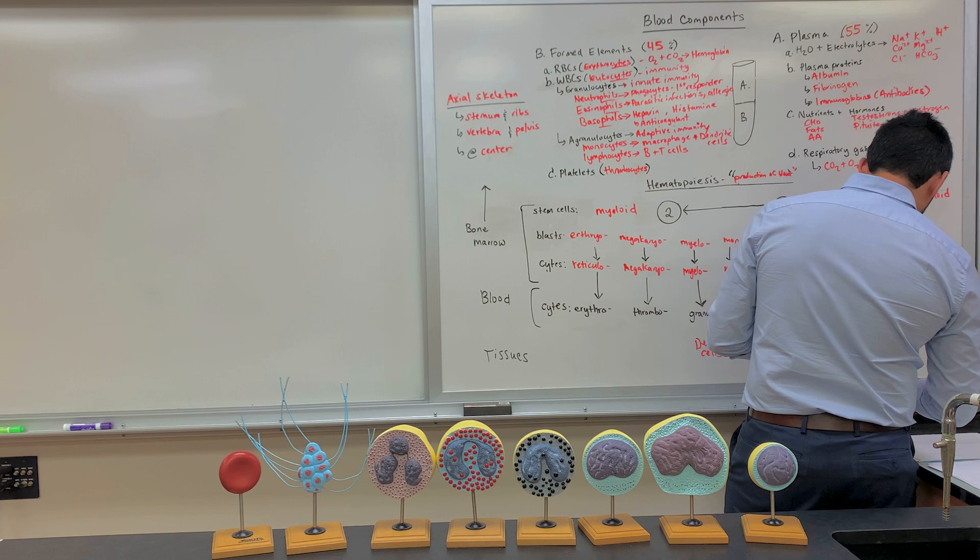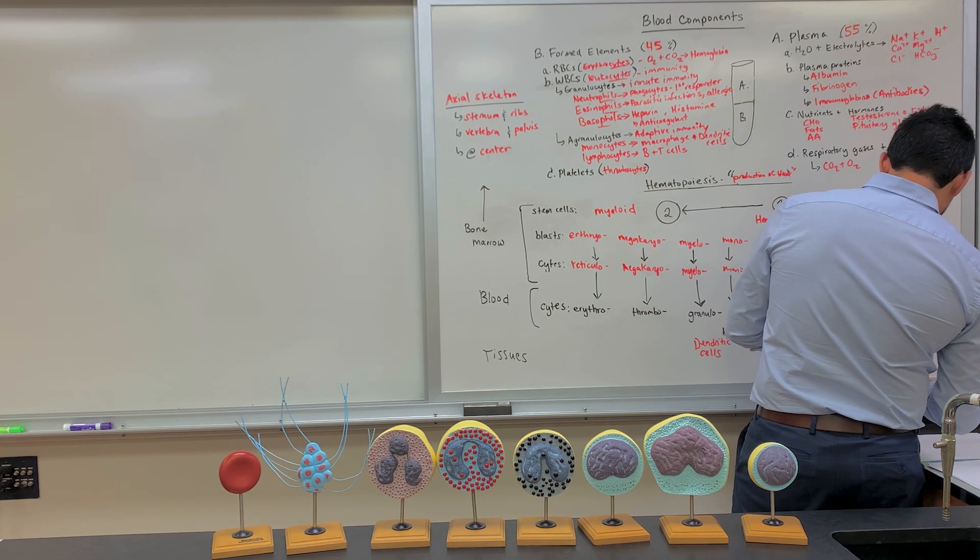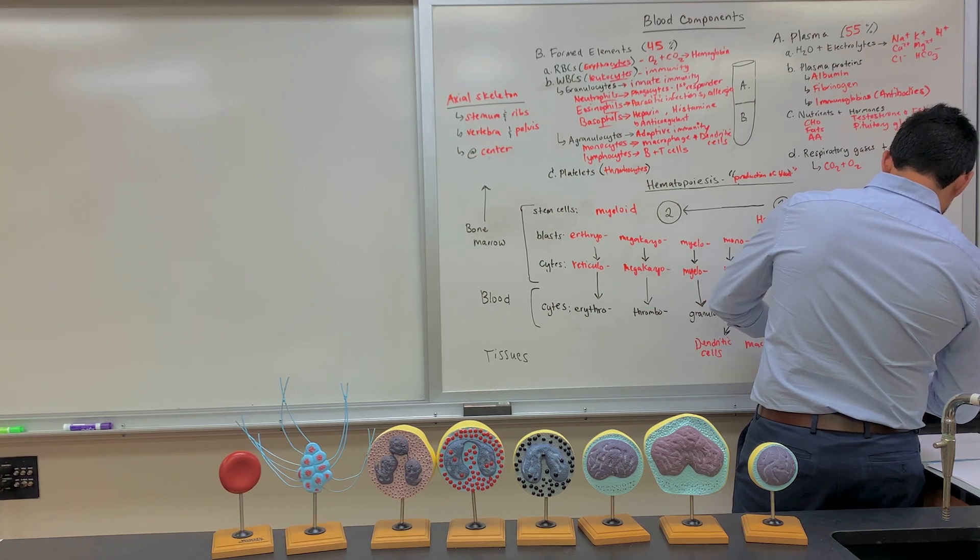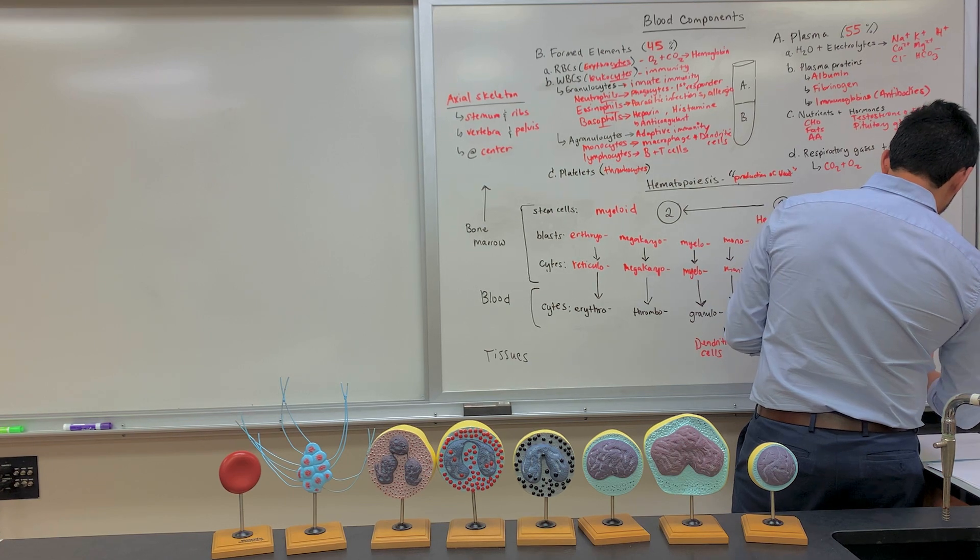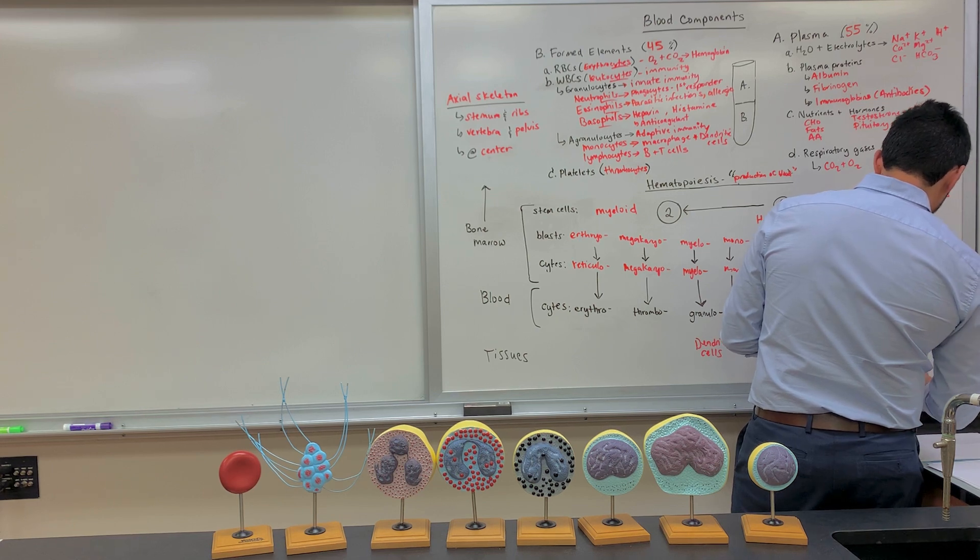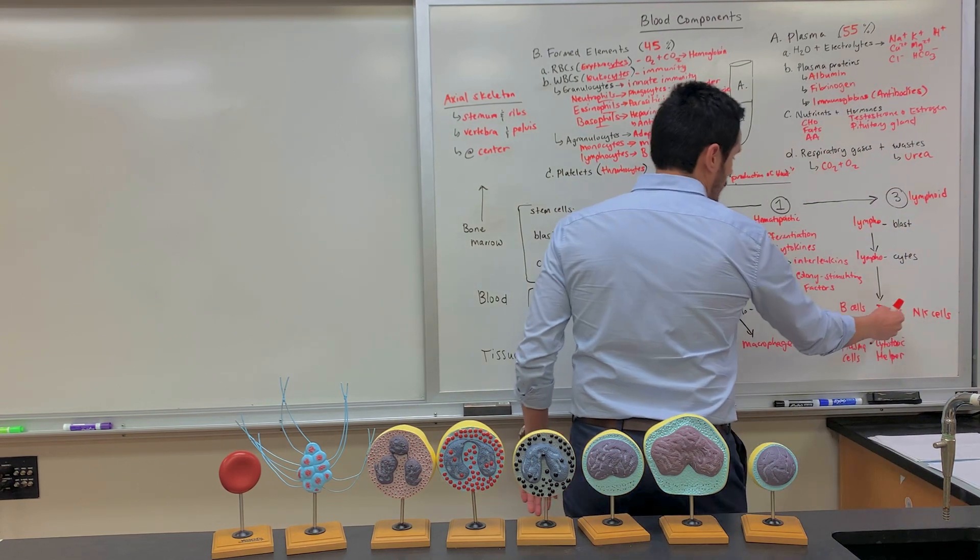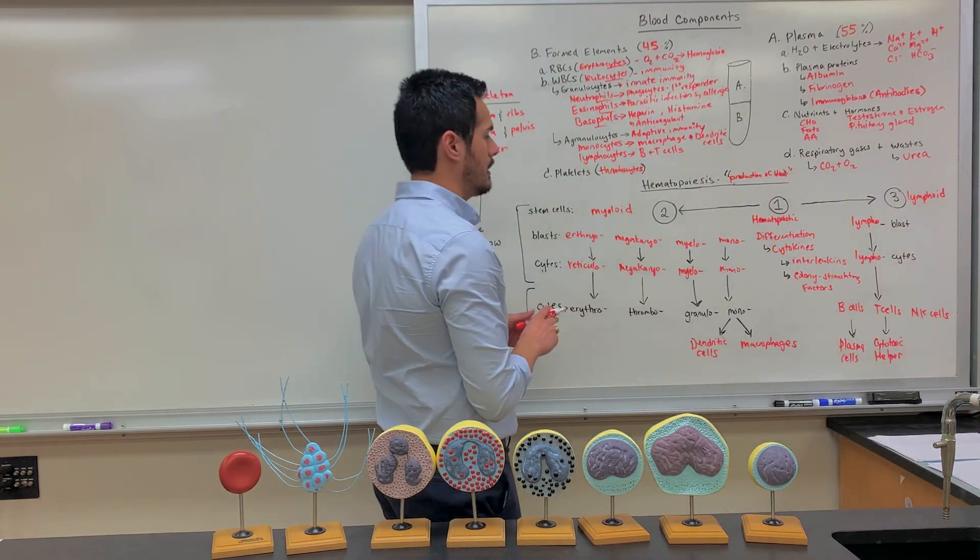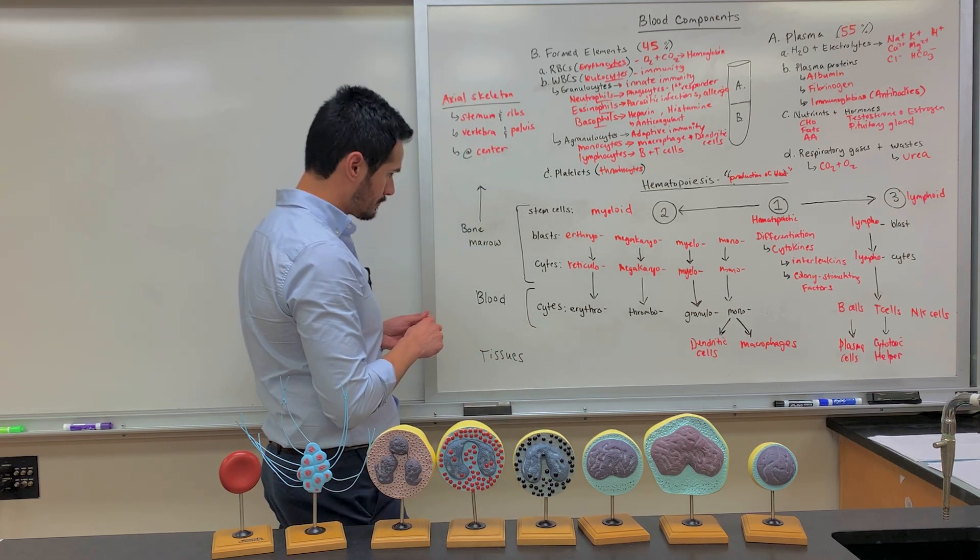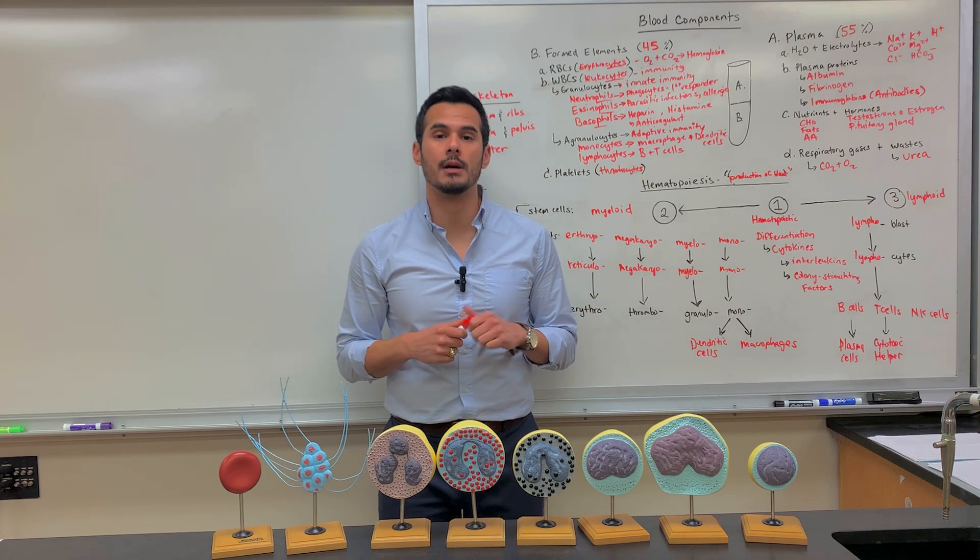So B cells develop into plasma cells, and then T cells develop into cytotoxic T cells, as well as helper T cells. And then we already have the differentiated natural killer cells. Okay, so that's going to do it for hematopoiesis.